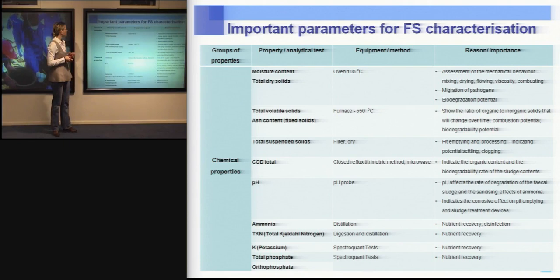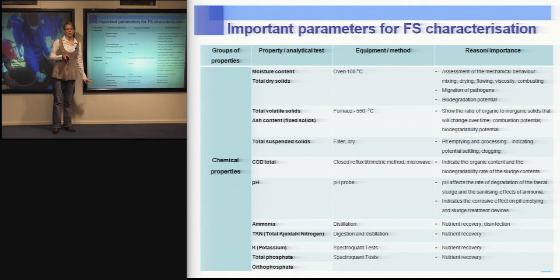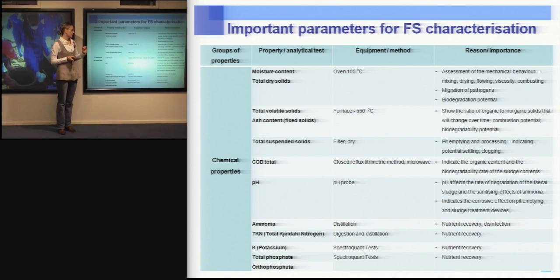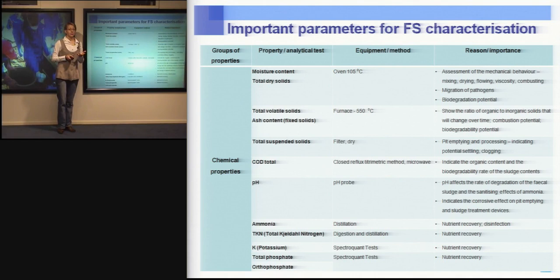What are the important parameters for fecal sludge characterization? I have summarized in a table some of the most commonly used and most important parameters. I have grouped them into four categories. The first is chemical properties, which include moisture content, total solids, suspended solids, ash content, volatile solids content, COD — total or fractionated — pH, ammonium, TKN, phosphates, orthophosphates, potassium, etc.